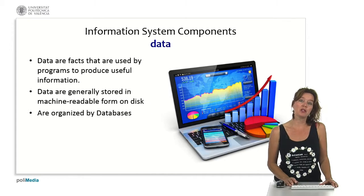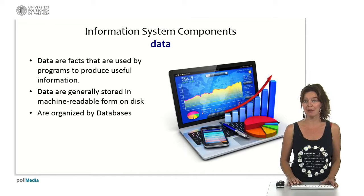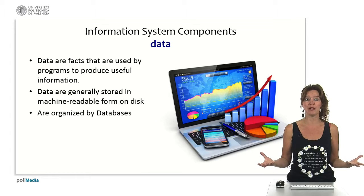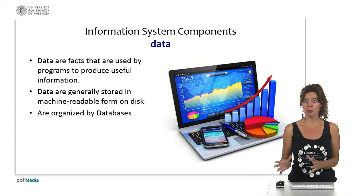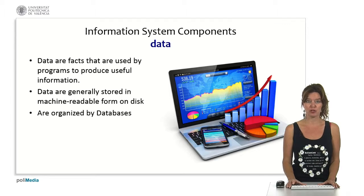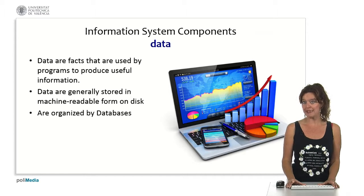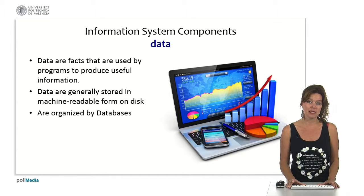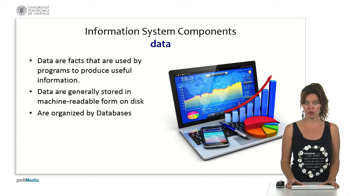The next component is data, which is the foundation of all the information we can obtain. Data consists of the raw, unprocessed facts that you use to get information. This data is normally stored in databases, which is a way of storing data on a disk in a form that is readable by the machine.